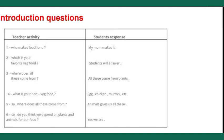Fourth question: 'What is your favorite non-veg food?' — students answer chicken, egg, mutton, etc. Fifth: 'Where does all this come from?' — students answer 'All this comes from animals.' The sixth is the linkable question: 'Do you think we depend on plants and animals for our food?' Students answer yes, leading to the concept that plants, animals, and human beings are interdependent.